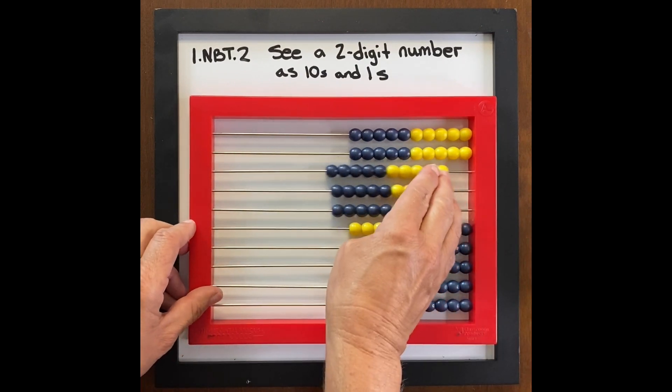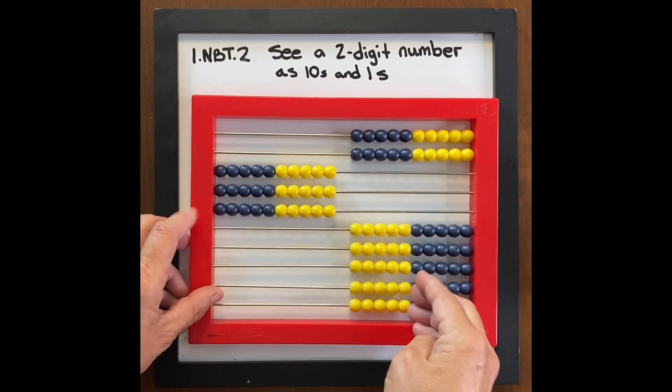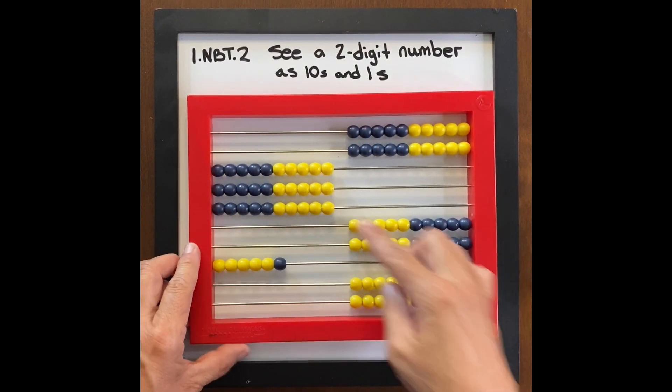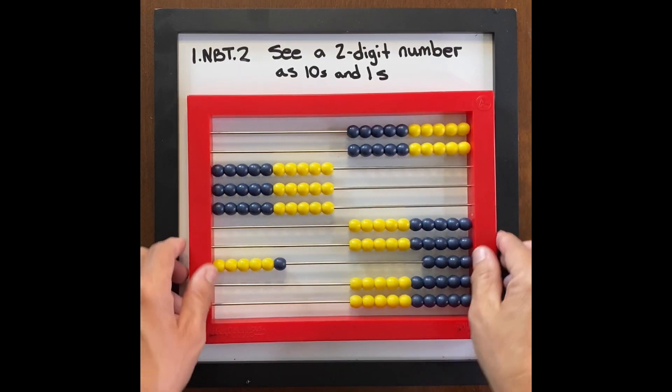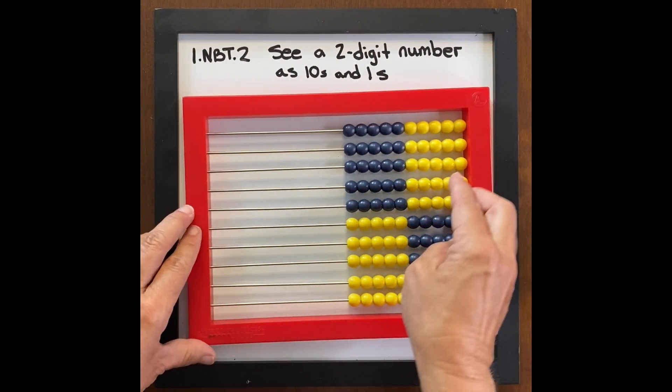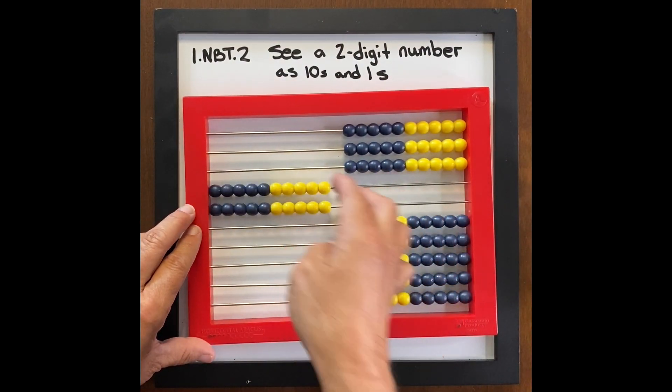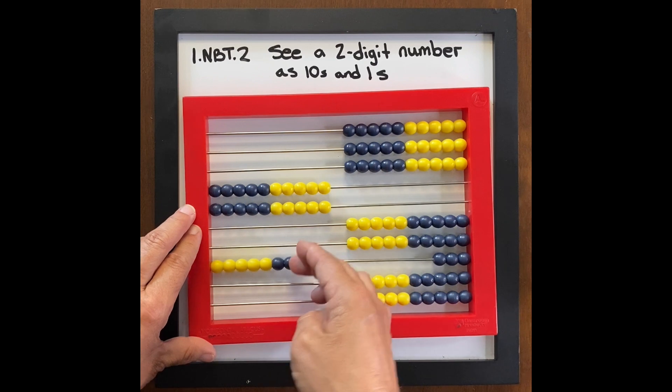Guess my number. Three tens, six ones. Don't always have to start up here. I have three tens, six ones. Again, this is just a very quick intro to help students understand the concept of tens and ones.